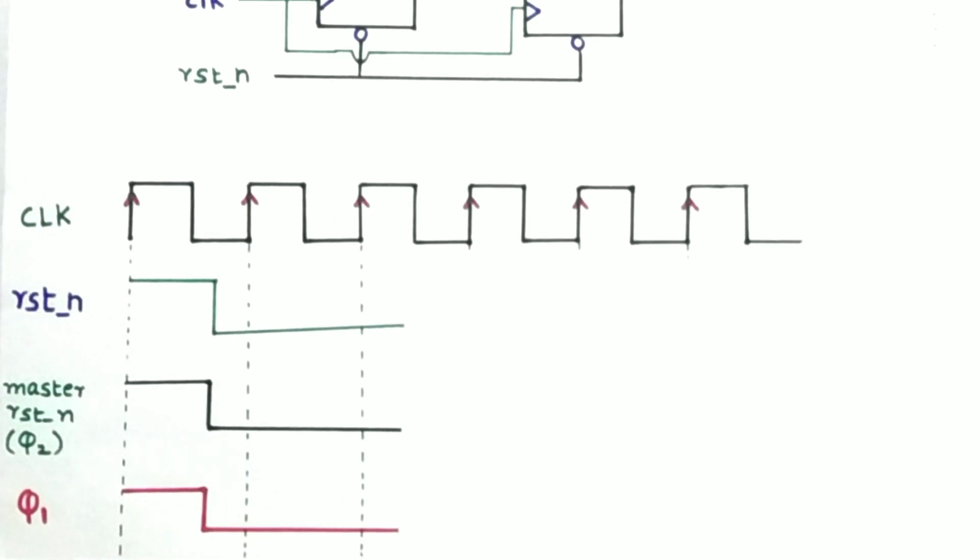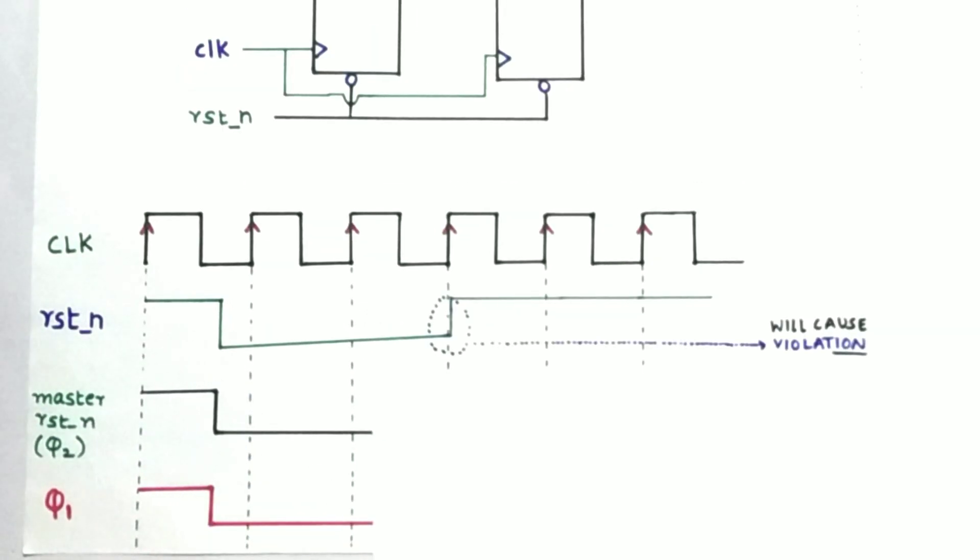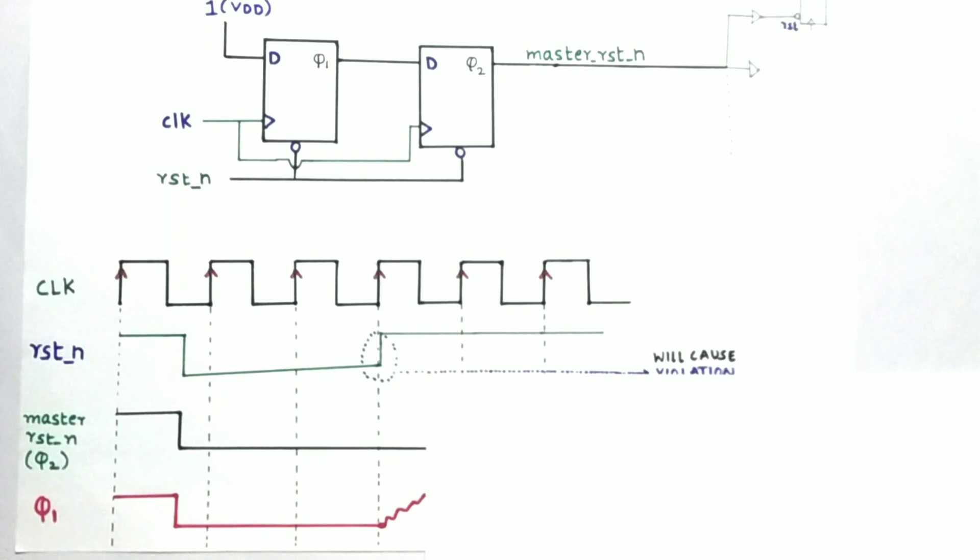So the initial inputs are 1 and 1, so when the reset is applied, the outputs will become 0 for both the flops. The change of the reset at the positive edge of the clock will cause a metastable condition at Q1, that is the first flop. But Q2 will consider the previous value and will continue to remain 0.